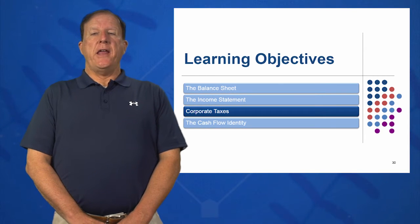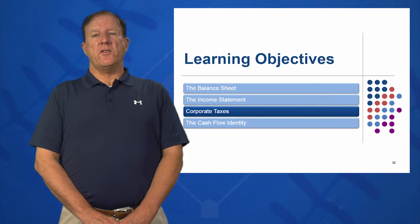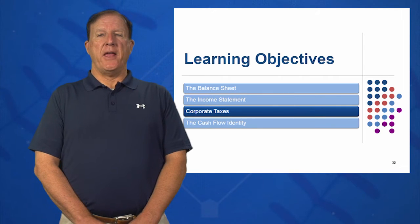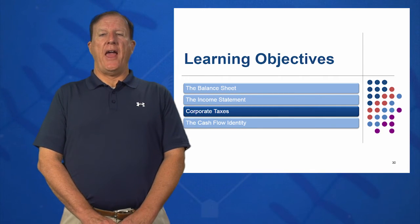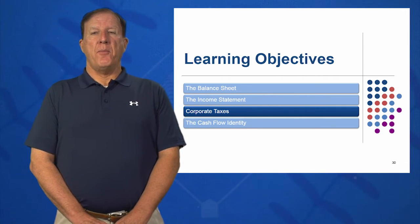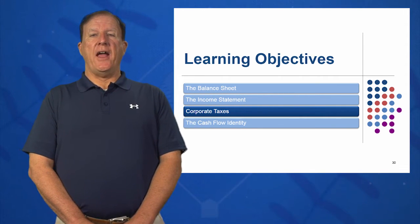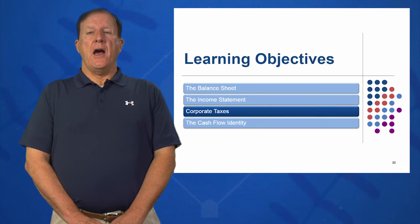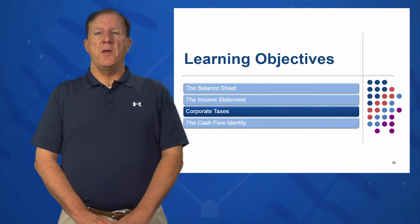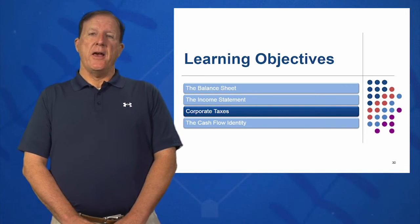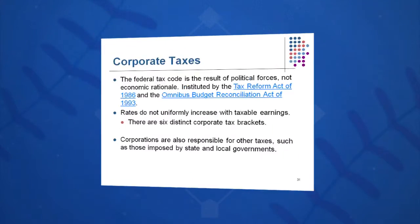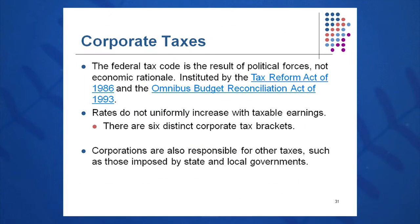In learning objective three, we're going to discuss corporate taxes. Where do corporate tax rates come from? These are corporate taxes that corporations pay, not personal income taxes that you and I pay, so we want to make that distinction. Where do these rates come from, who sets them, and when have they changed? These are corporate taxes, not individual or personal income taxes.